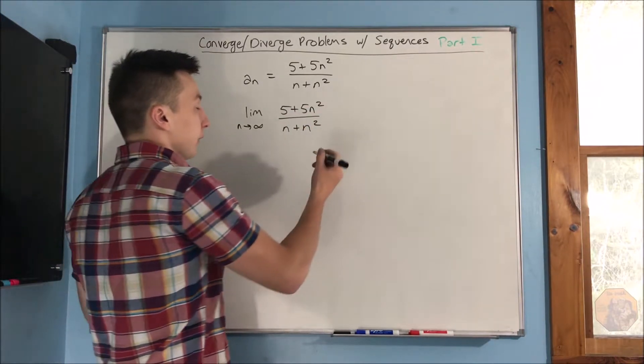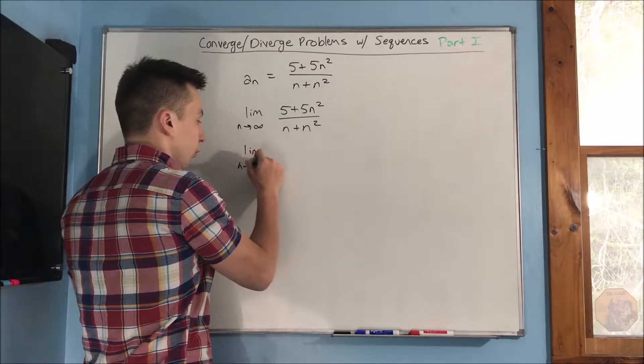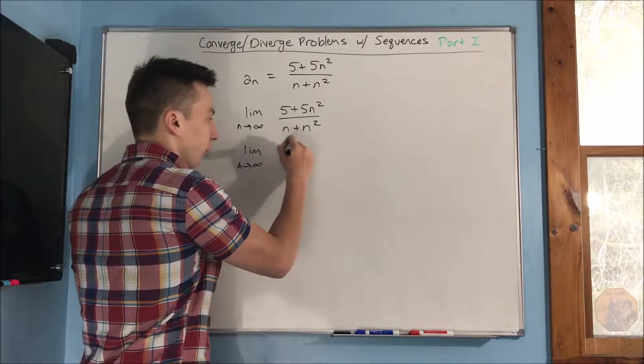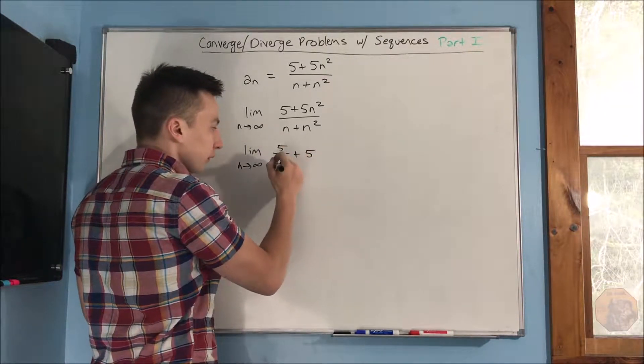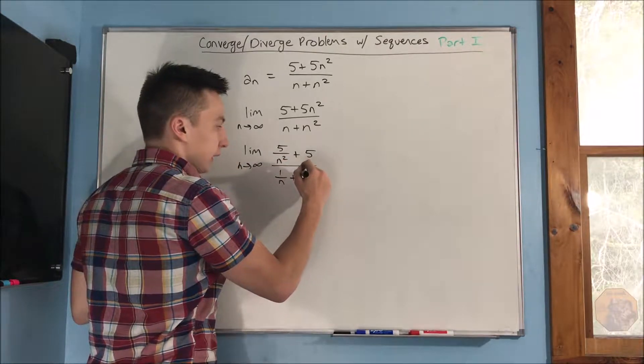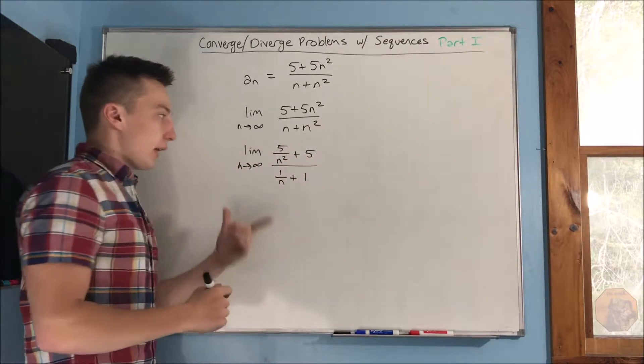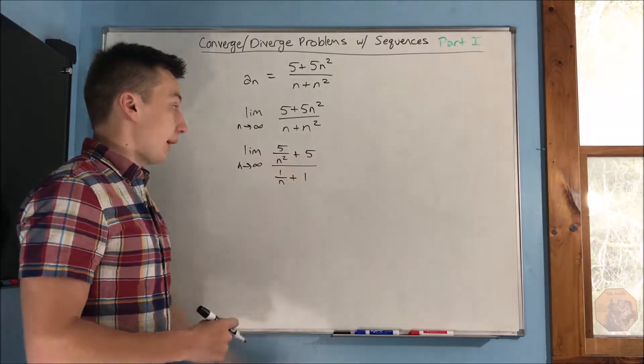If we were to do that, we would get 5 over n squared plus 5 over, this would be a 1 over n plus 1. That's dividing every single term by n squared, which is the highest power of n.